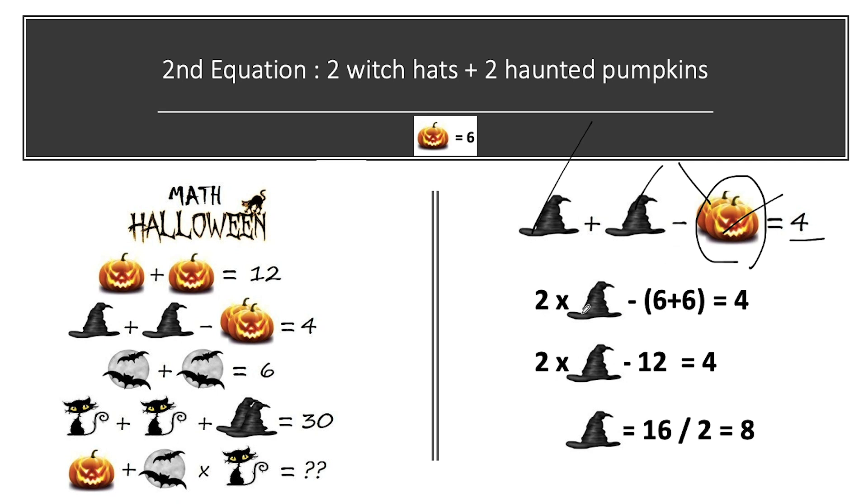So it will be 2 into witch hat minus, there are 2 pumpkins. So 1 pumpkin value equal to 6. So 2 pumpkins value comes out to be 6 plus 6 or 6 into 2 is equal to 4. So 2 into witch hat minus 12 is equal to 4.